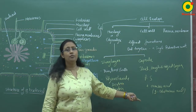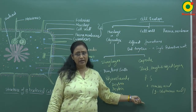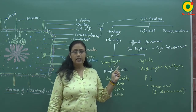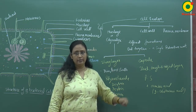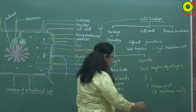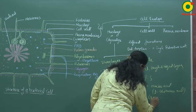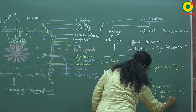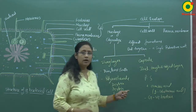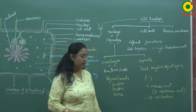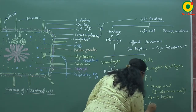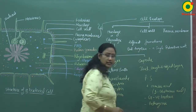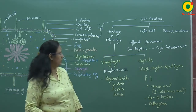The capsulated form of bacteria is mainly present in gram negative bacteria. These capsulated bacteria are pathogenic in nature — they are disease-causing bacteria.